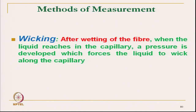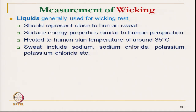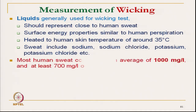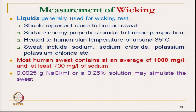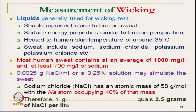After wetting of the fibre, when the liquid reaches the capillary, a pressure is developed and the capillary force helps in transporting the liquid through the capillary. For measurement of wicking, we need a particular fluid to simulate human sweat. We cannot directly use plain or distilled water. Water mixed with 2.5 grams NaCl per litre closely simulates human sweat as far as wicking performance is concerned.